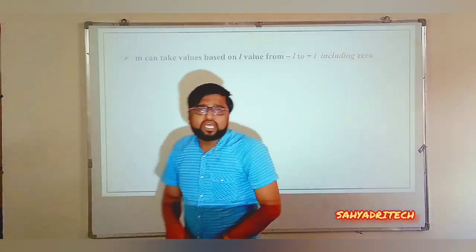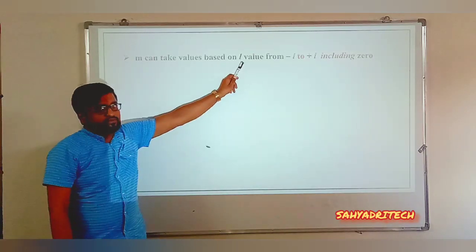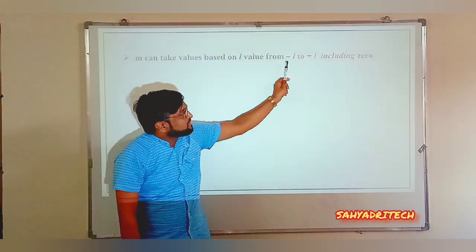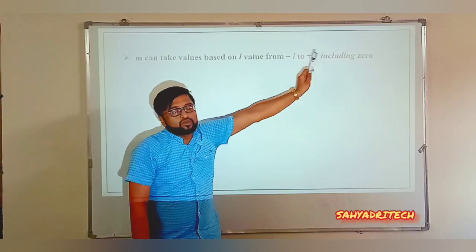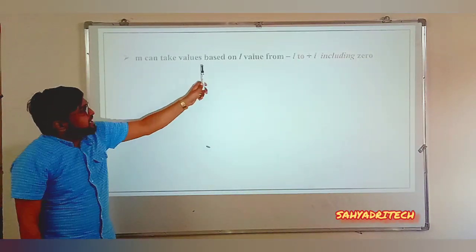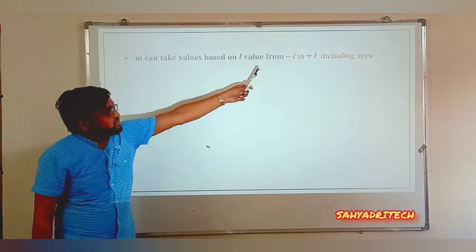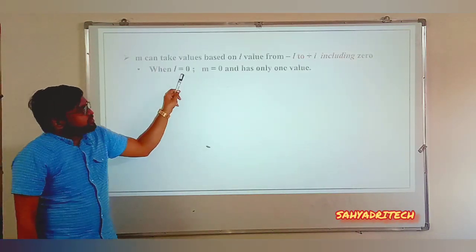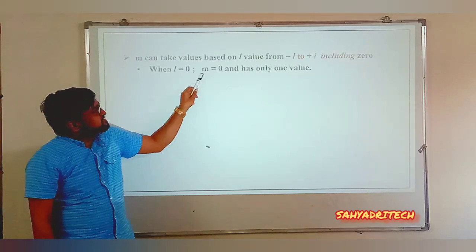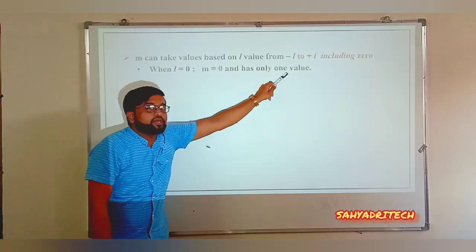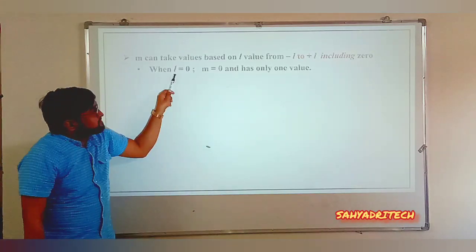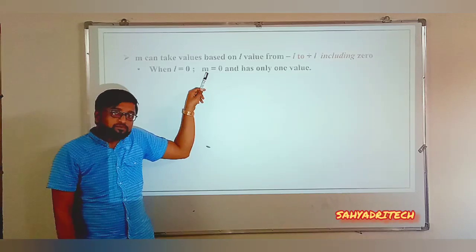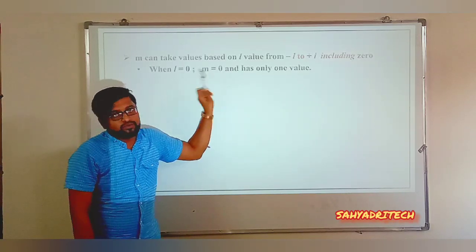M can take values based on the L value, ranging from −L to +L including 0. When L = 0, M has only one value: M = 0. So the s subshell has only one orbital corresponding to M = 0.